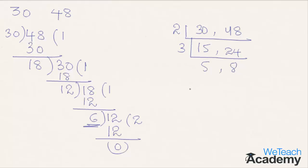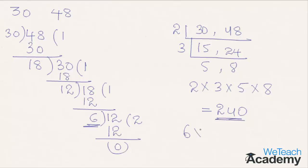Multiplying all the factors together: 2 × 3 × 5 × 8 = 240. So the LCM is 240. Now the product of LCM and GCD is 6 × 240, which equals 1440.